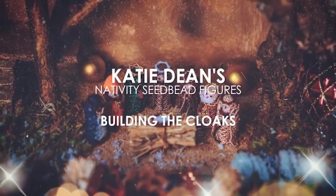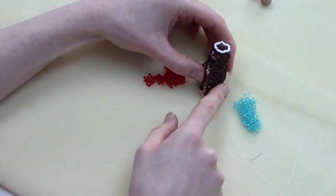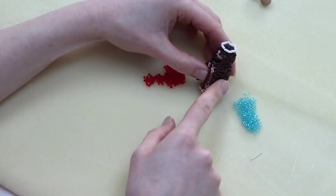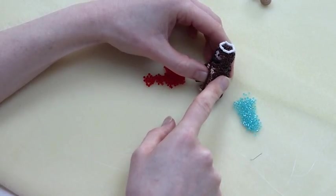The last little bit I want to show you is how to make the cloaks for the characters. This will apply to Mary, Joseph, all three shepherds and one of the kings.